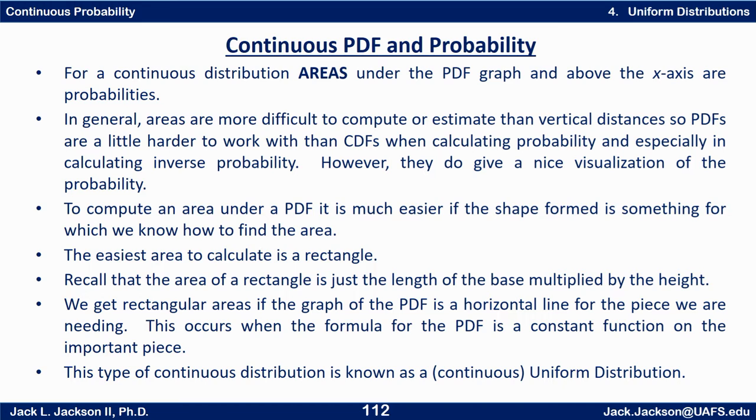Recall that the area of a rectangle is just the length of the base multiplied by the height. So we can get rectangular areas if the graph of the PDF is a horizontal line for the piece we're needing. This occurs when the formula for the PDF is a constant function on this important piece. This type of continuous distribution is known as a uniform distribution.